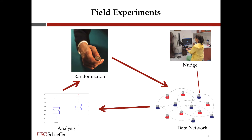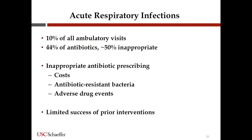We'll be talking more about this at our 3 o'clock session. Our group in particular has been interested in acute respiratory infections, which represent 10% of all ambulatory visits. About 40% of people who come to these visits get antibiotics, and about half of those are inappropriate, meaning antibiotics were prescribed for a viral infection. This has obvious problems: it increases cost, there's potential for antibiotic resistance, and patients themselves can have adverse drug events. Prior research has shown that education and other standard approaches are only modestly effective, reducing prescribing about 5 percentage points when it's at about a 50% inappropriate rate.